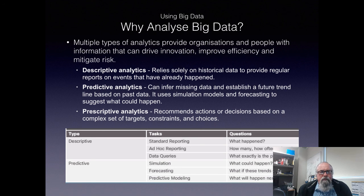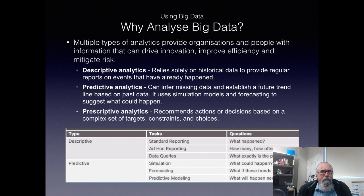Why do we analyze big data? Multiple types of analytics provide organisations and people with information that can drive innovation and improve efficiency while mitigating risk. Descriptive analytics relies solely on historical data and regular reports — very traditional. Predictive analytics looks at patterns that have been happening previously to establish a future trend. In our agricultural scenario, we look at sunlight, temperature, and humidity to forecast what soil conditions will be over the next few days or weeks. Prescriptive analytics recommends actions or decisions based on a complex set of targets, constraints, and choices — we use this a lot when dealing with humans, for instance identifying at-risk students.